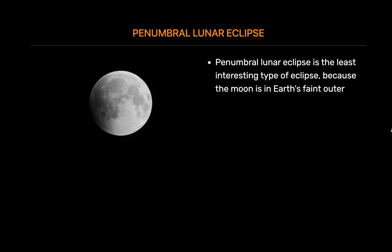Penumbral lunar eclipse. Penumbral lunar eclipse is the least interesting type of eclipse, because the Moon is in Earth's faint outer penumbral shadow. Unless you're a seasoned sky watcher, you likely won't notice the effect, in which the Moon is subtly shaded by Earth's shadow.